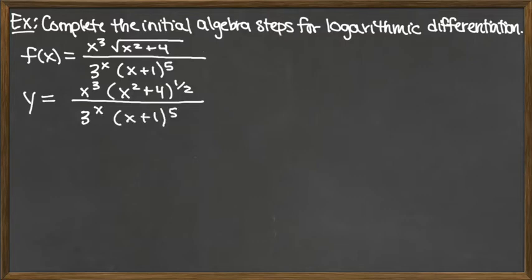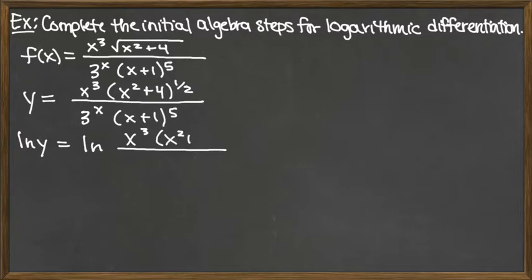Once we have the function rewritten, we take the natural log of both sides. So we have the natural log of y on the left, and then we have the natural log of this fraction on the right. We've got x cubed on the top times x squared plus 4 raised to the one-half power on the top, and on the bottom we have 3 to the x and the factor x plus 1 raised to the fifth power.